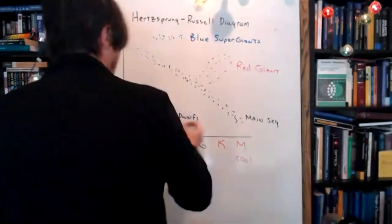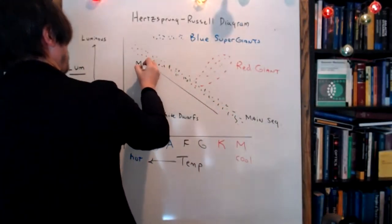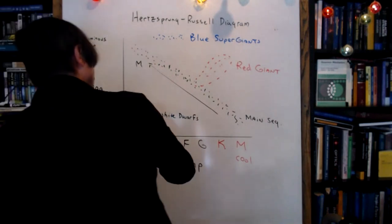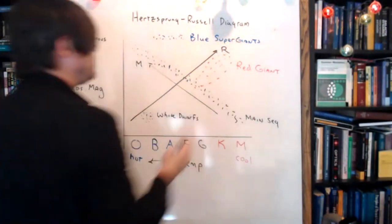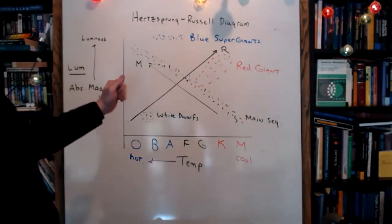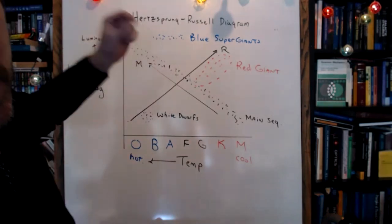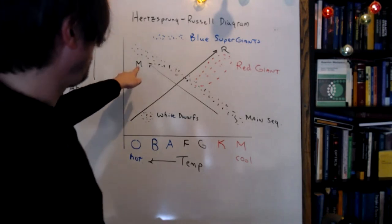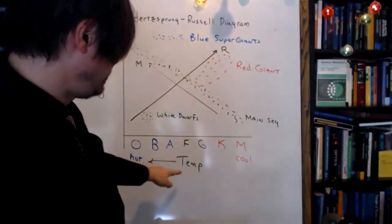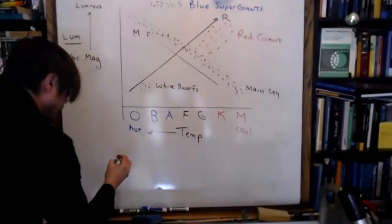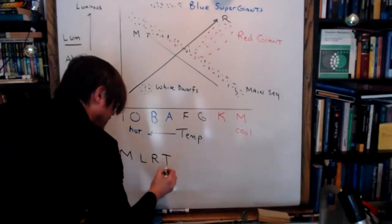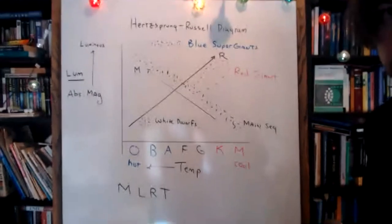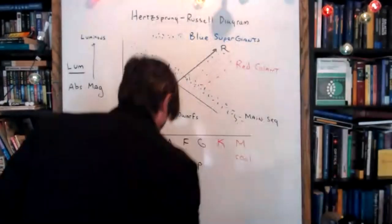Two other important things about this graph: the mass of a star increases diagonally up and to the left of the HR diagram, and the radius of a star increases diagonally to the right. What's so cool about an HR diagram is that once you've placed a star on it, it tells you every piece of information about the physics of that star. The four key parameters — M, L, R, and T — can all be gleaned by analyzing a star on the HR diagram.